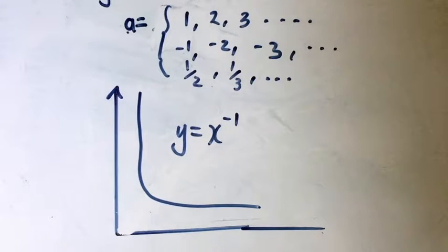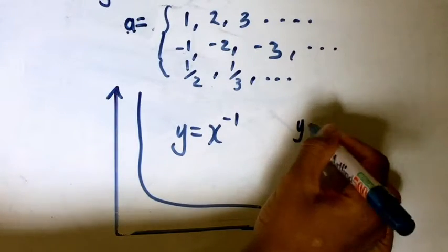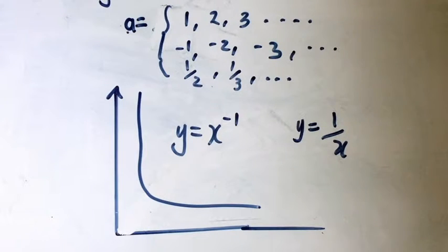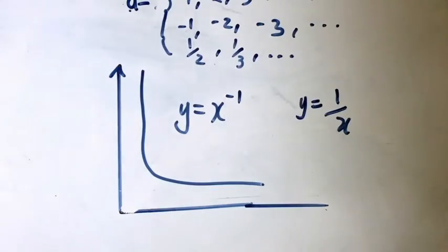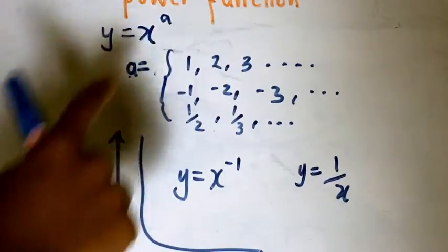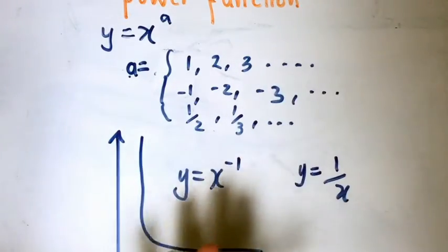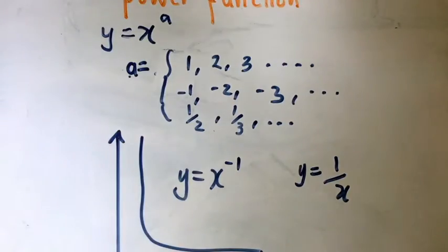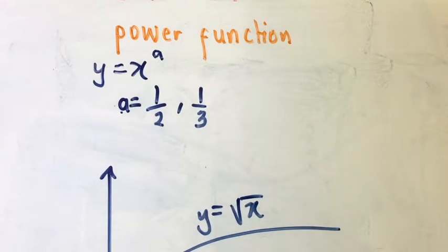With a negative one, we get y equals one over x. Similarly, y equals one over x squared corresponds to a equals negative two, and y equals one over x cubed corresponds to a equals negative three. All of these are power functions with negative values of a.